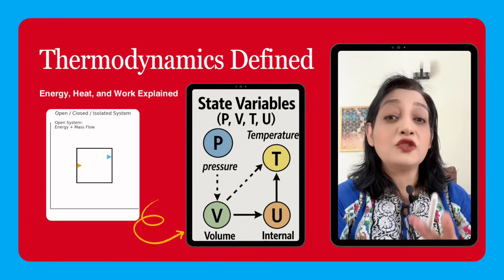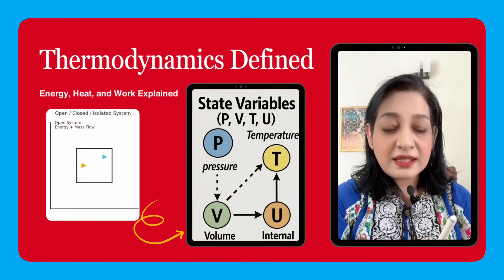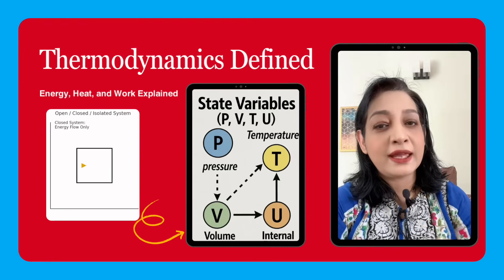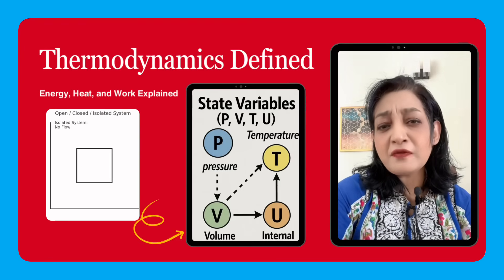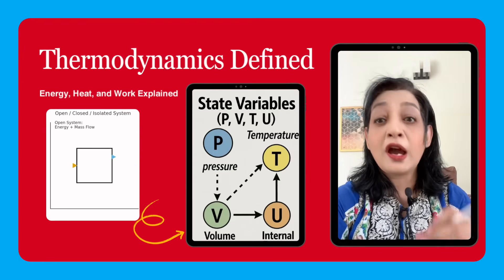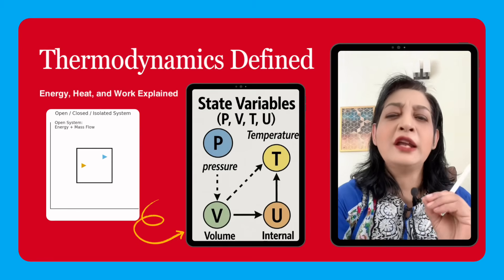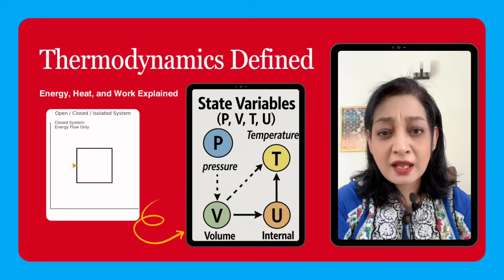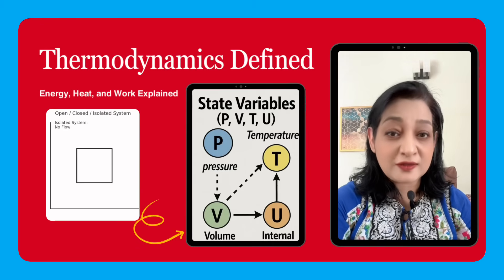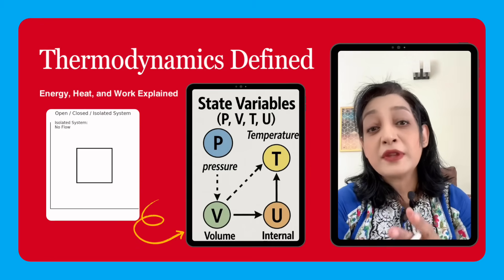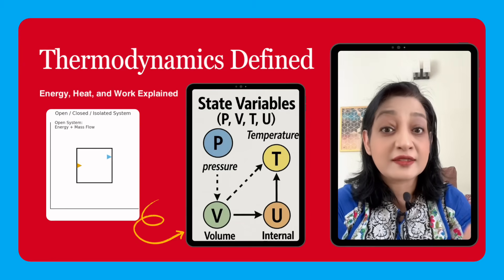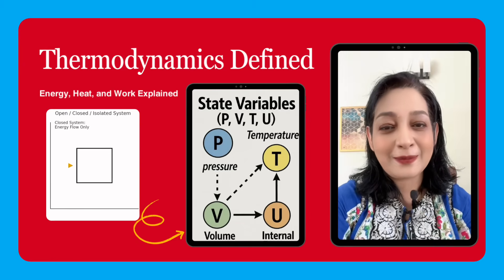Thermodynamics is the branch of physics that deals with heat, work, and energy and how they interact. In simple words, thermodynamics explains how energy moves, how it changes form, and how it affects matter. For example, when we boil water on the stove, heat energy from the flame is transferred to the water. This change is explained by thermodynamics.